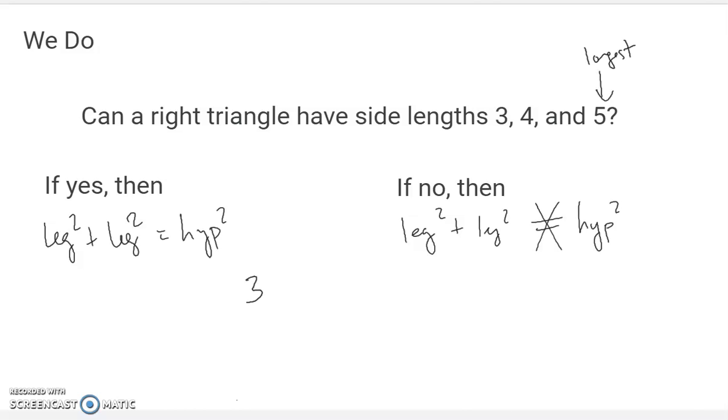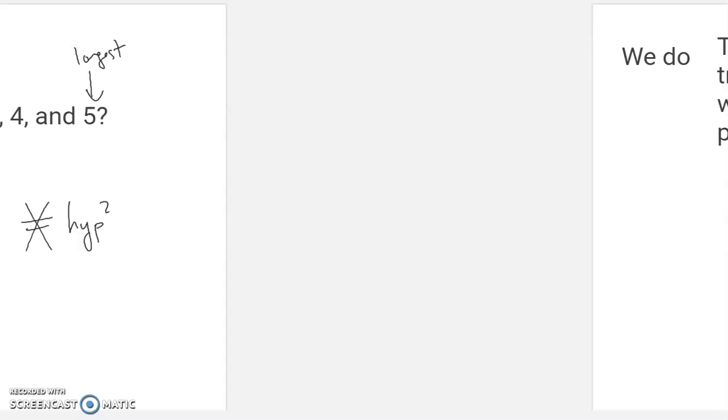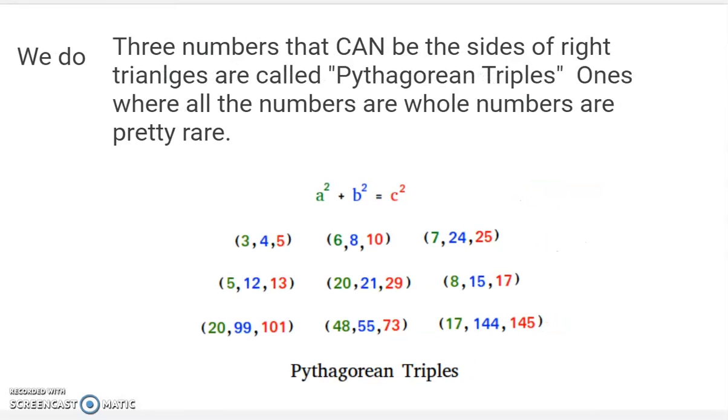So we want to know does 3 squared plus 4 squared equal 5 squared? Spoiler, it does. This is 9 plus 16 equals 25. And that is a check. I want to do the question marks here. So those do work. So we have a yes situation. And this is indeed a right triangle. Three, four, and five. That is if you want to pause and write if you need it.